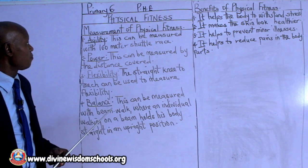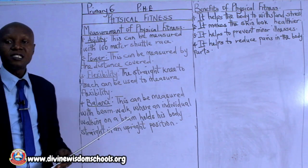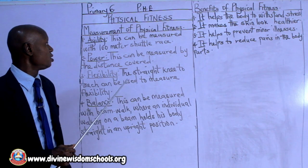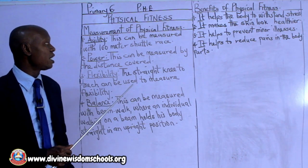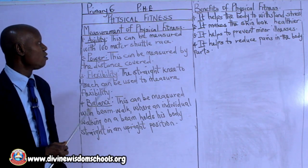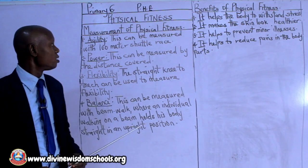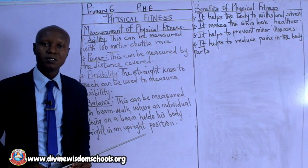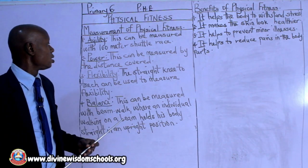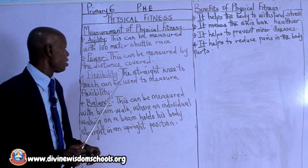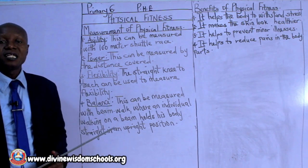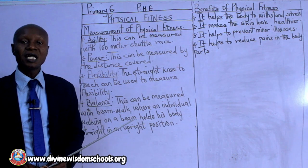The first component that we'll be looking at is agility. Agility can be measured with a 100-meter shuttle race. Number two is power, which is the ability to do work.